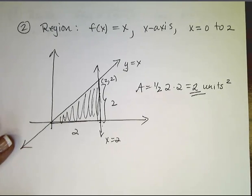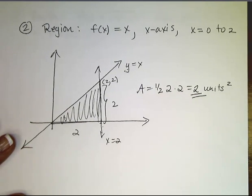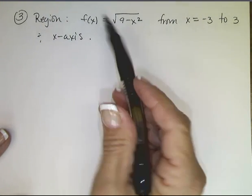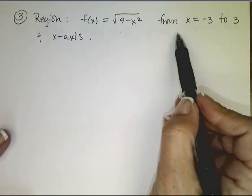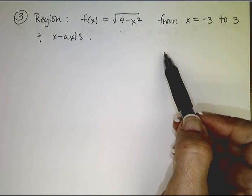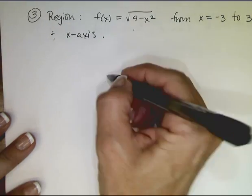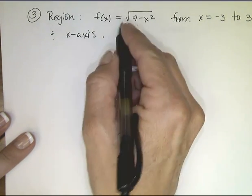Again, super easy. What if I shake it up just a little bit? And I ask you to find the area of the region bounded by this function, x equals negative 3 to 3 and the x-axis. Well, again, it's going to be important to draw the picture.